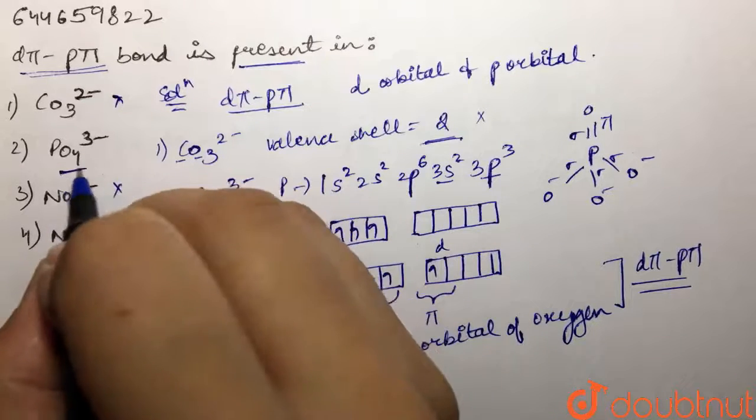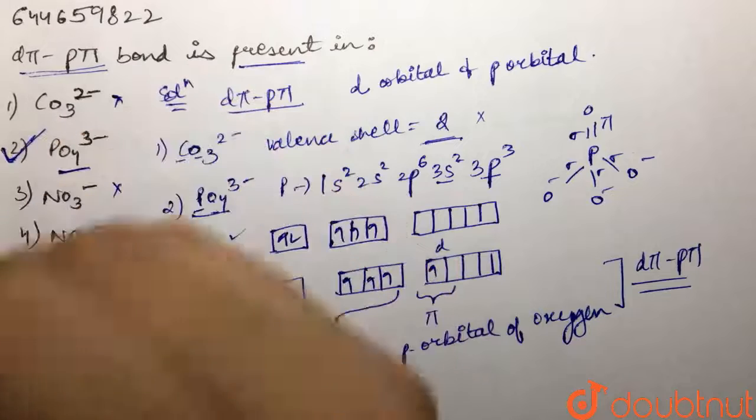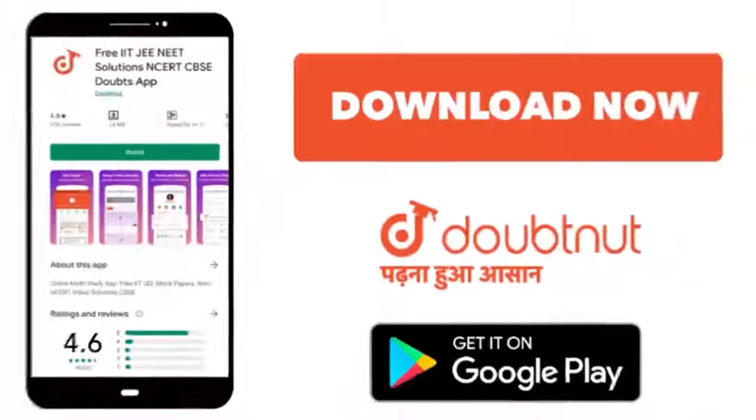If you look at our options, this is wrong, this is wrong, this is wrong. Only this is the one that has p-pi d-pi bond in it, so our answer is second. For class 6 to 12, IIT, and NEET level, trusted by more than 5 crore students. Download Doubtnet today.